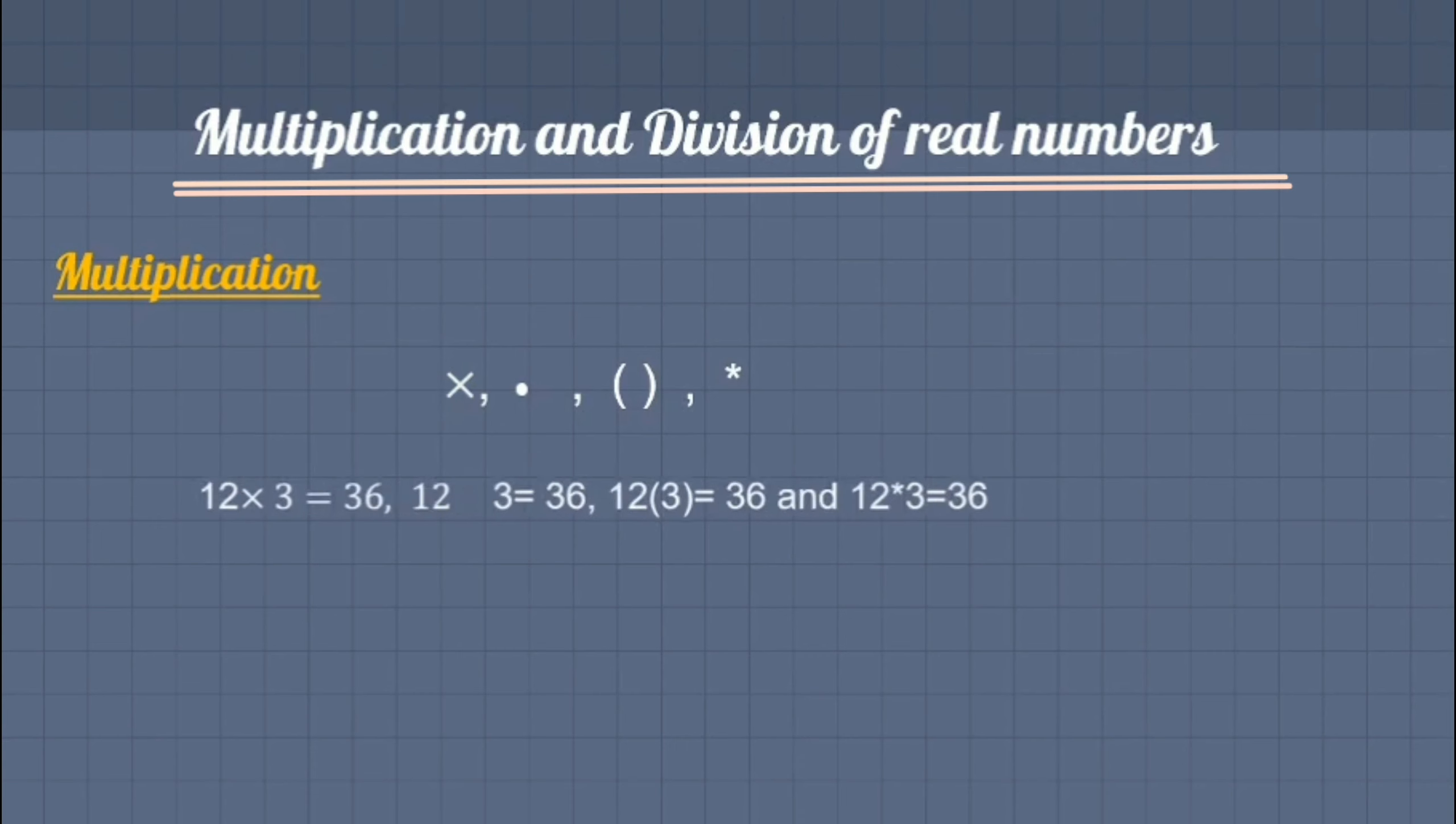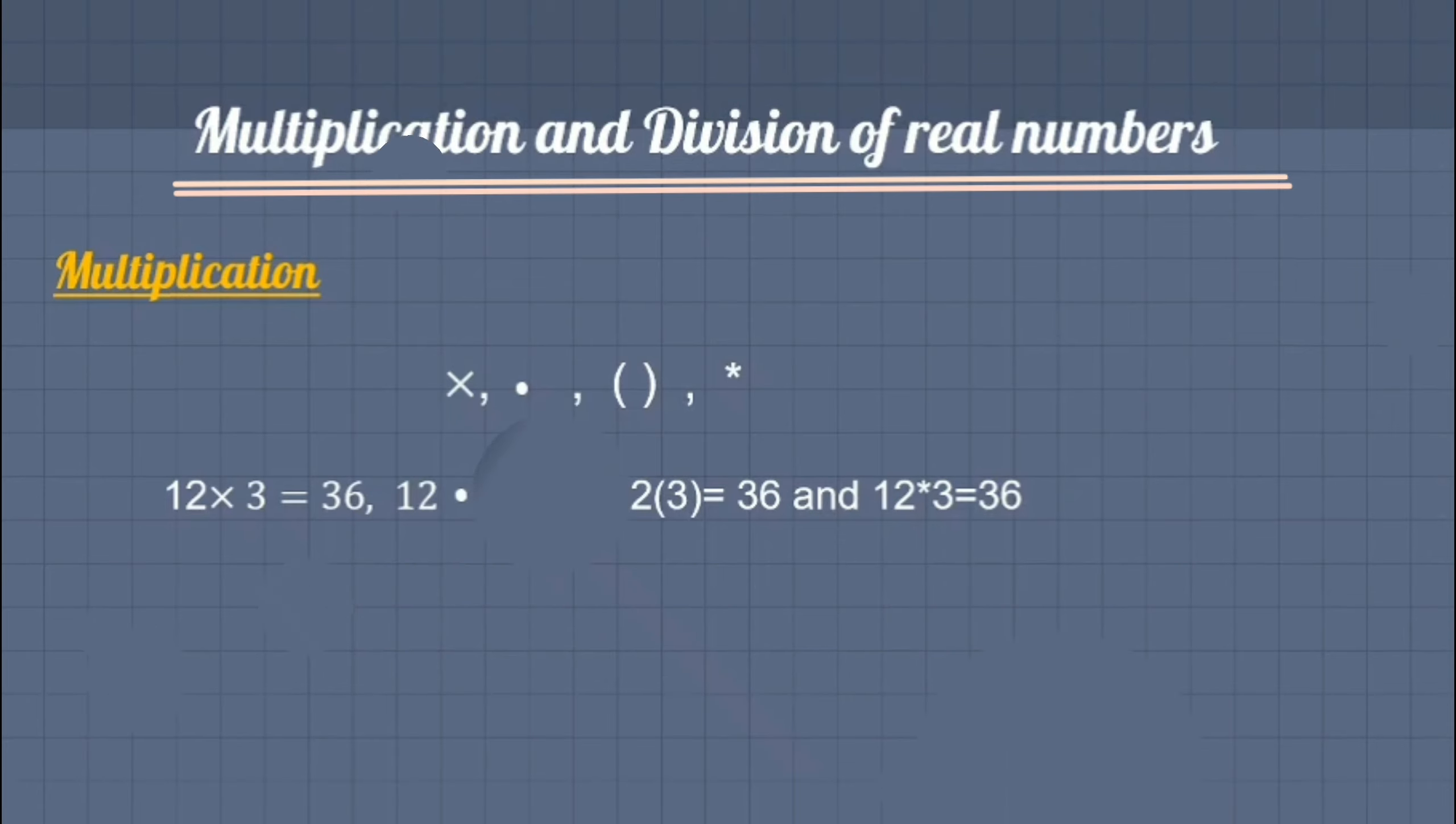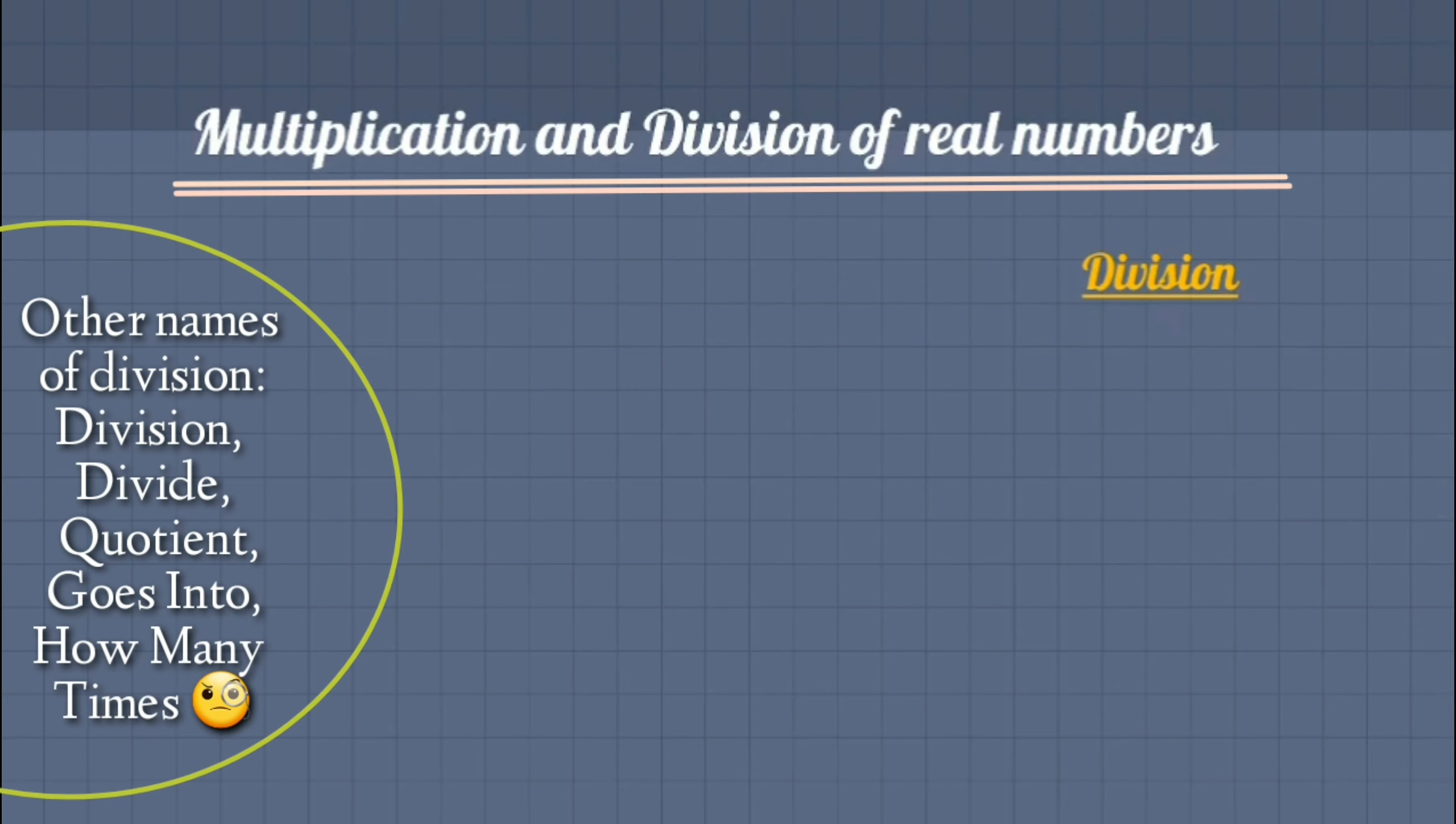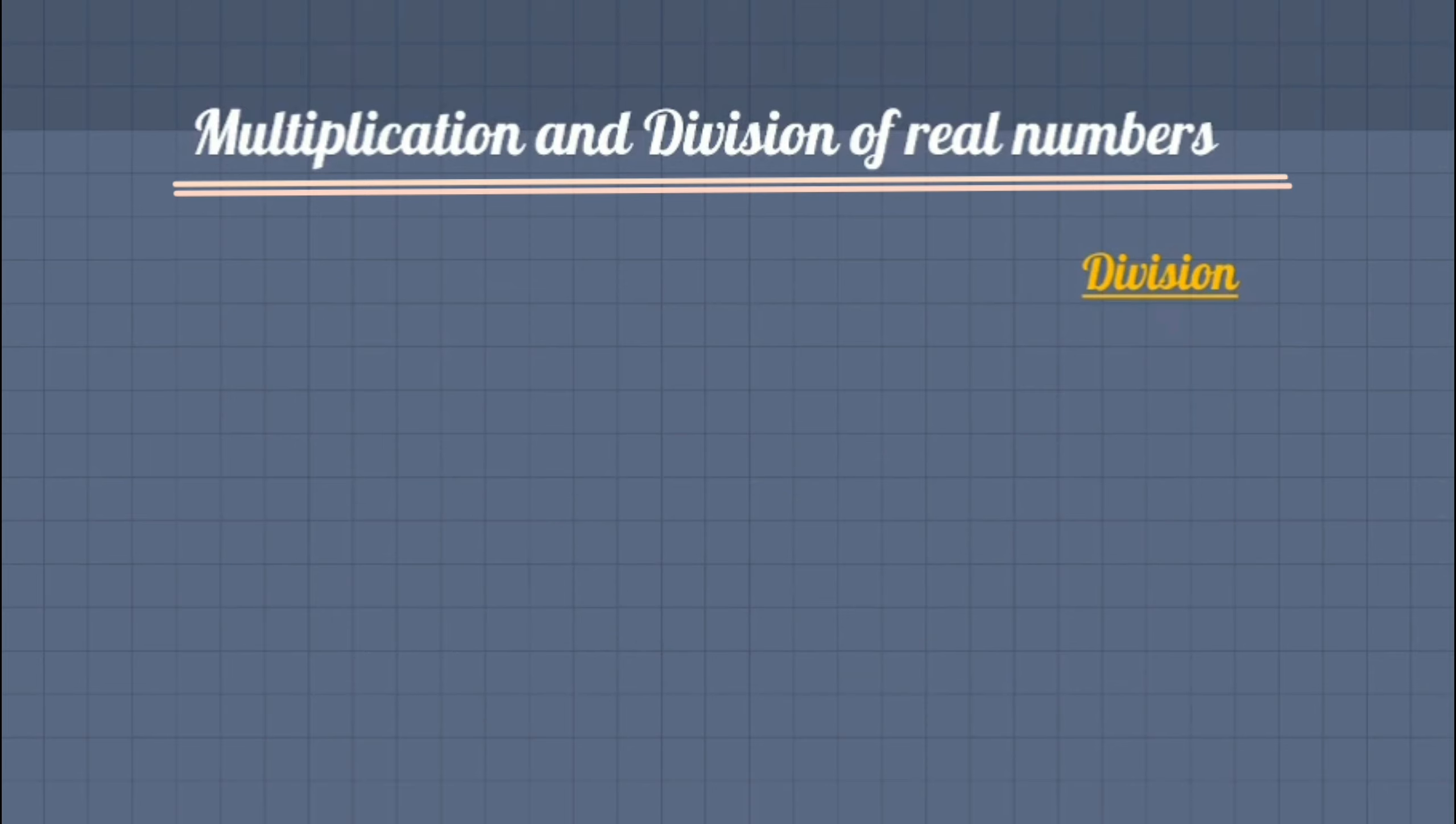Each of the expression read as 12 times 3. Whereas division is the reverse operation of multiplication. It is the process of separating evenly among different groups. In division we actually commonly use these three terms.